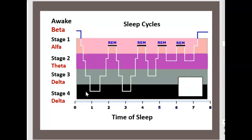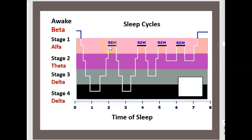In stage three and four, the sleep is deep. Then we go to stage two and then to stage one to have what is called REM — rapid eye movement. REM is a paradoxical sleep, and it is a light sleep by contrast to stage three and four, which are deep sleep.